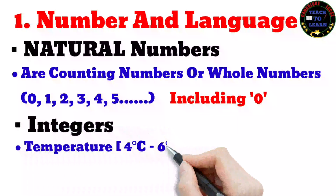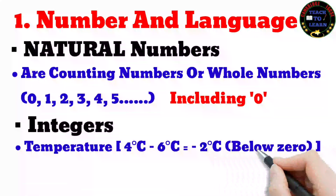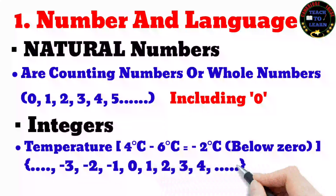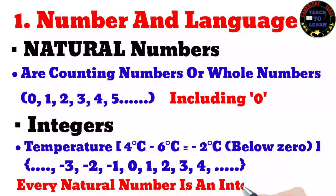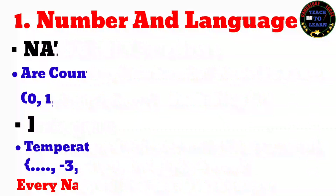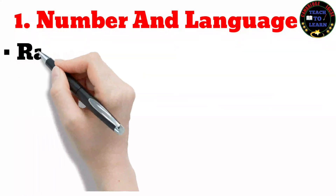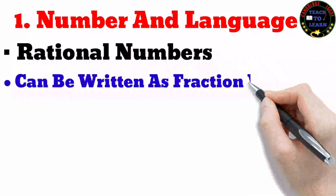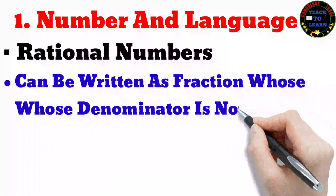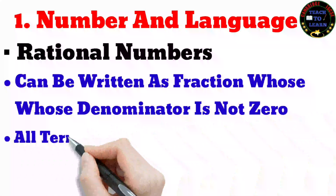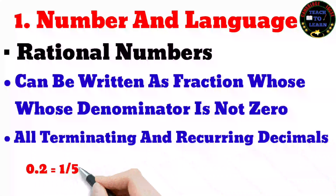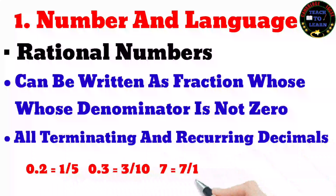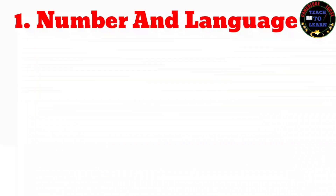Natural numbers are counting numbers or whole numbers including zero. A good example of integers is temperature — for example, minus one, minus two, zero, one, two, three. Every natural number is an integer. Rational numbers: all rational numbers can be written as a fraction whose denominator is not zero. All terminating and recurring decimals are rational numbers, as they can also be written as a fraction.